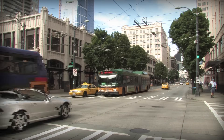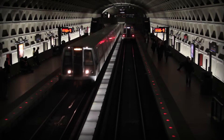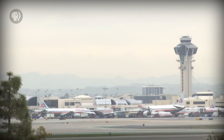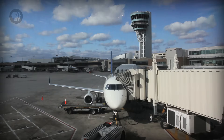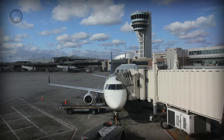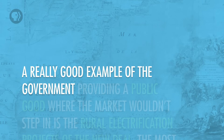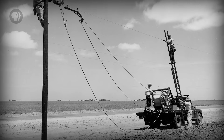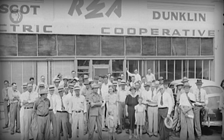Public goods are things and services that the government provides that can be enjoyed by everyone, and once provided, cannot be denied to a particular subset of the population. One example is public transportation — in many places the government provides bus or subway services at highly subsidized costs. In many cases, the government steps in to provide public goods when markets wouldn't. It's not likely that private companies would provide an air traffic control system. A really good example is the rural electrification projects of the New Deal, most famously the Tennessee Valley Authority. It wouldn't have been profitable for power companies to provide electricity to rural towns and farms, so the government stepped in and provided it.